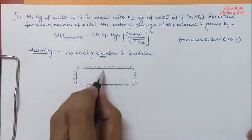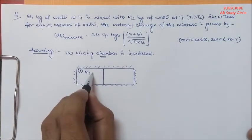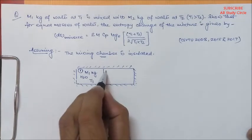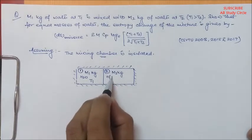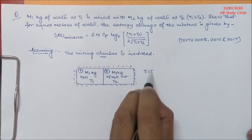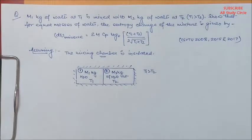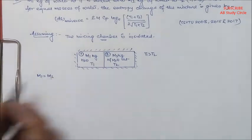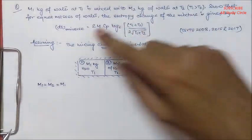This is body 1, which is having M1 kg of water at temperature T1, where T1 is greater than T2. It says that for equal masses of water when they are mixed — that is M1 is equal to M2, say M — the entropy change of the mixture should be the given expression.